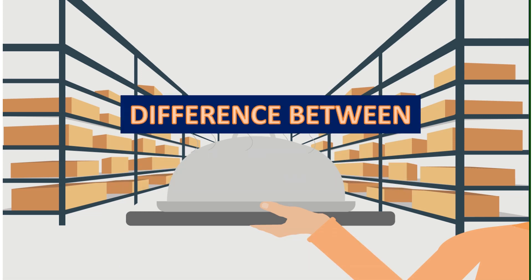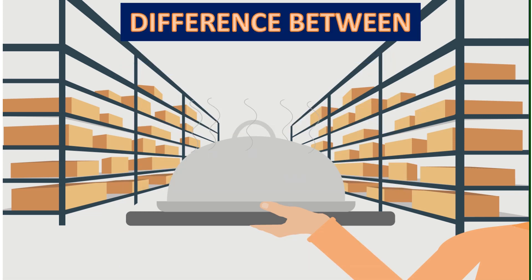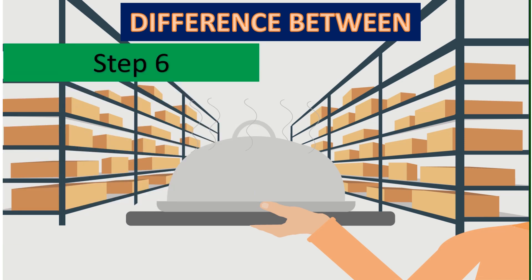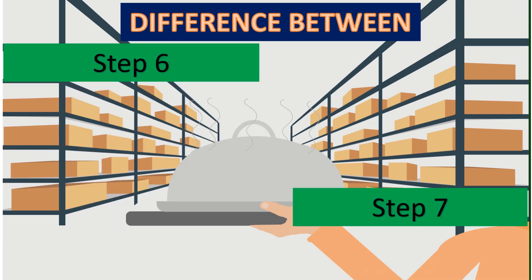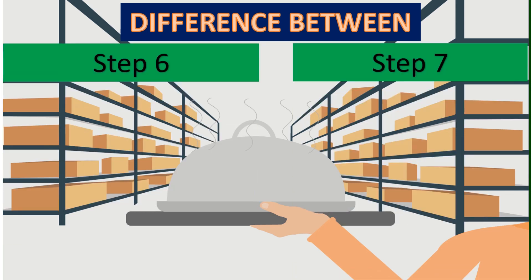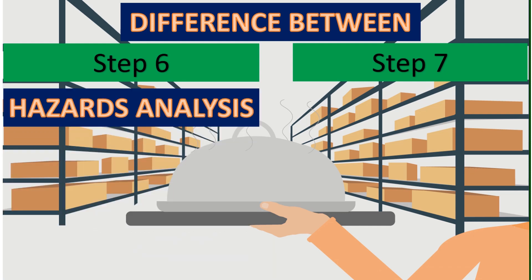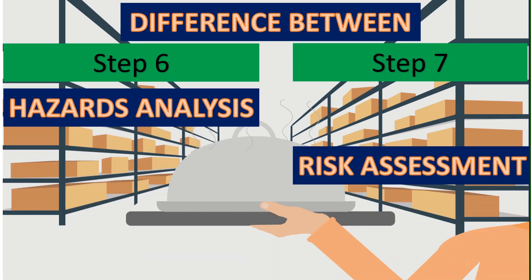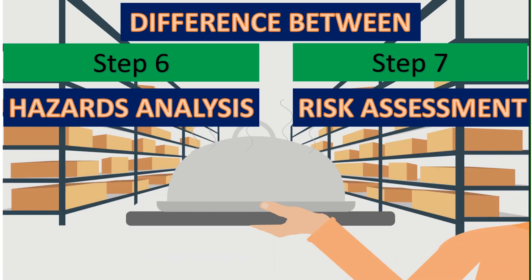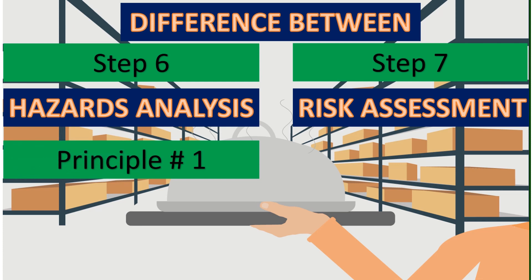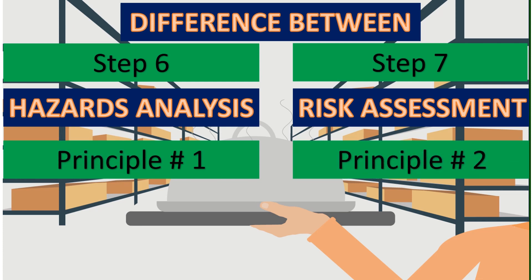In this video, we are going to discuss the most important and critical steps of HACCP — Step 6 and Step 7 — also known as HACCP Principle No. 1 and Principle No. 2. Principle No. 1 is 'conduct the hazard analysis' and Principle No. 2 is 'identify the critical control points.'